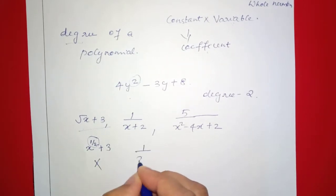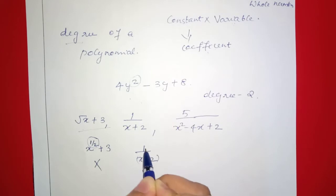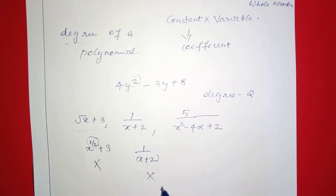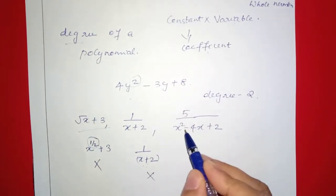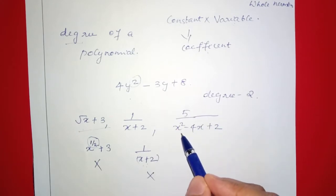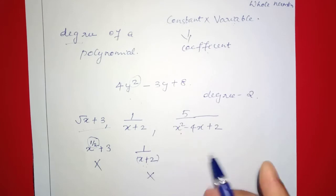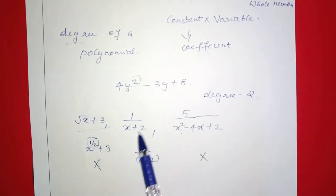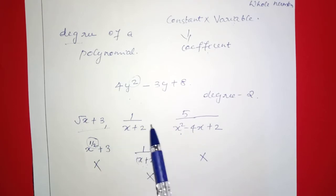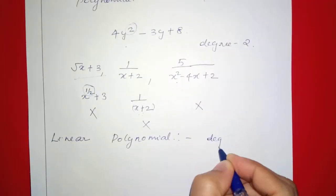Next one is 1 by x plus 2. This has a denominator, so if you write the power of x it will be negative. So this is not a polynomial. This is x squared minus 4x plus 2. If powers are whole numbers and non-negative integers, it will be a valid polynomial. Algebraic expressions with negative or fractional powers will not be polynomials.